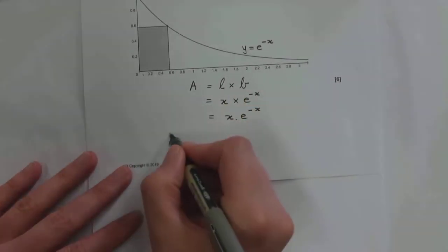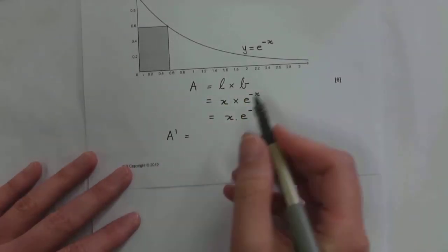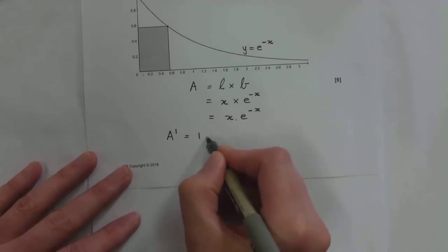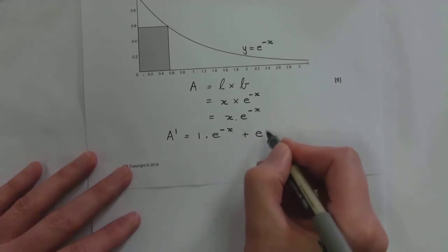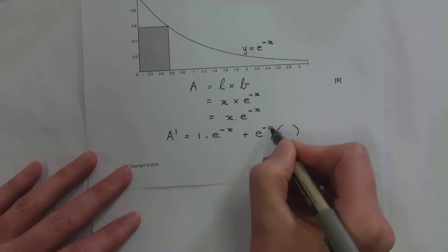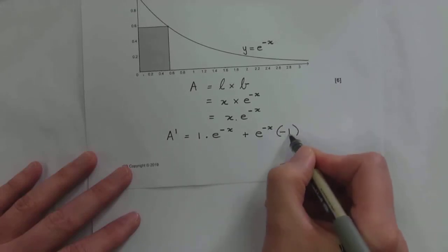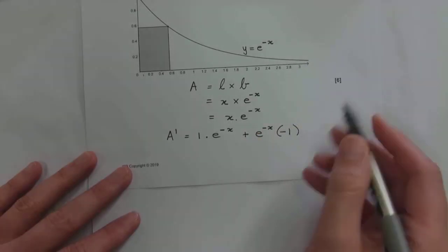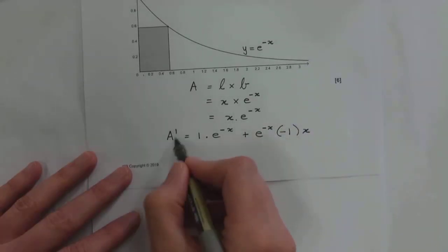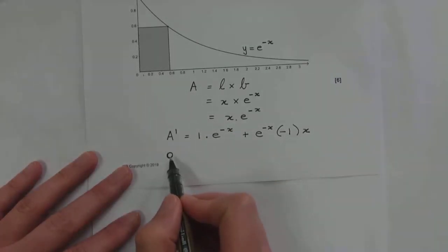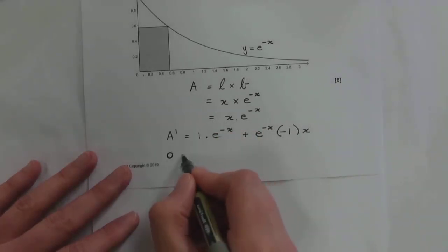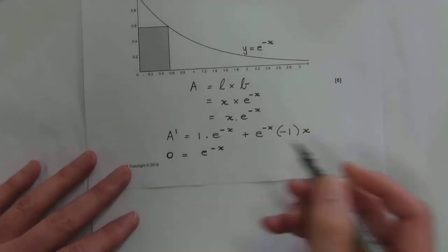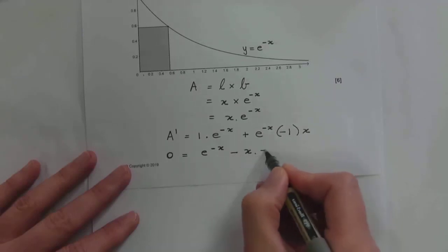Using the product rule: 1·e^(−x) plus x·e^(−x)·(−1) by chain rule. Setting the derivative equal to zero — please don't forget that zero, otherwise it's not an equation and you can't solve it, they will penalize you. So 0 = e^(−x) − x·e^(−x). We factorize taking out e^(−x) as a common factor, giving e^(−x)(1 − x) = 0.